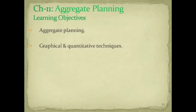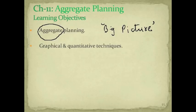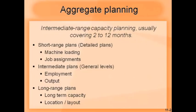Hello everyone, today we'll cover chapter 11, which is on aggregate planning. As the name suggests, aggregate planning means a big picture approach to planning. Aggregate means you club everything together into one — you don't look at details at this stage. In this chapter we'll also look at some of the techniques used.